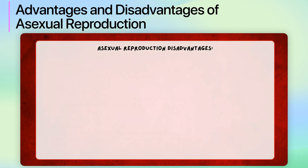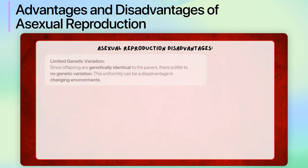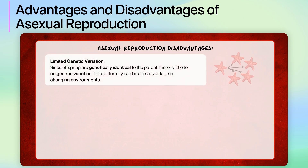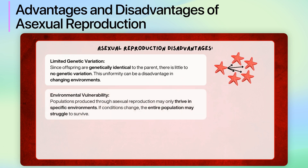Moving on to the disadvantages, since offspring are genetically identical to the parent, there is little to no genetic variation. This uniformity can be a disadvantage in changing environments. Additionally, populations produced through asexual reproduction may only thrive in specific environments. If conditions change, the entire population may struggle to survive.